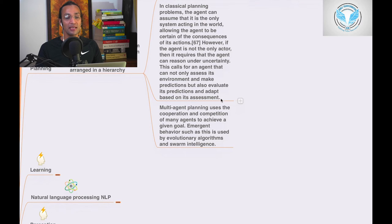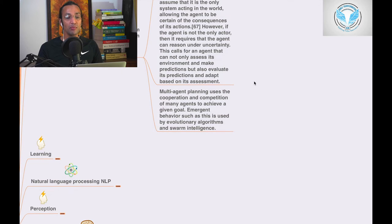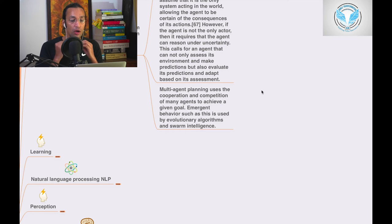Multi-agent planning uses the cooperation and competition of many agents to achieve a given goal. Emergent behavior such as this is used by evolutionary algorithms and swarm intelligence.